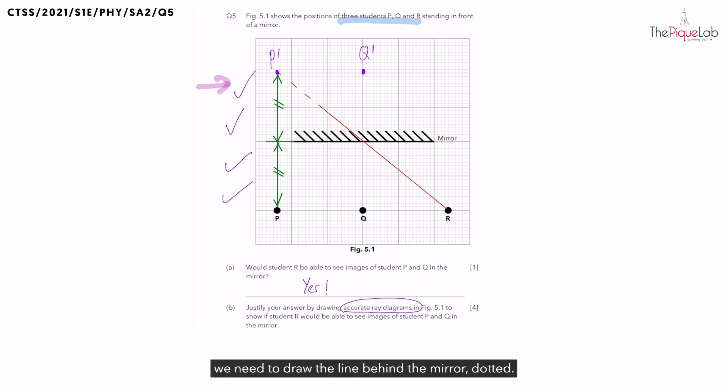So what ray have we actually drawn here? Is it the reflected or the incident ray? We have drawn the reflected ray. If you want to pause the video and do the same for Q, you can do that now.